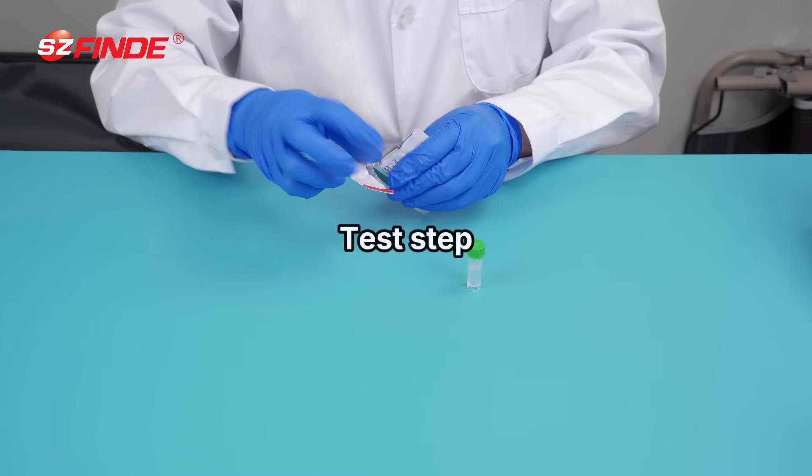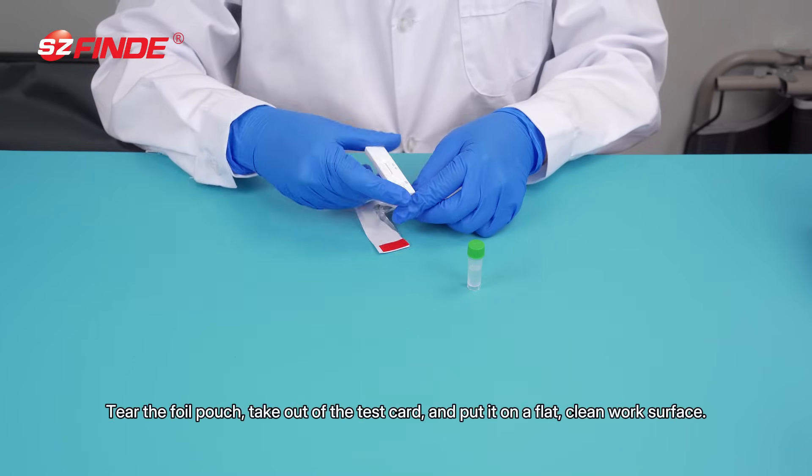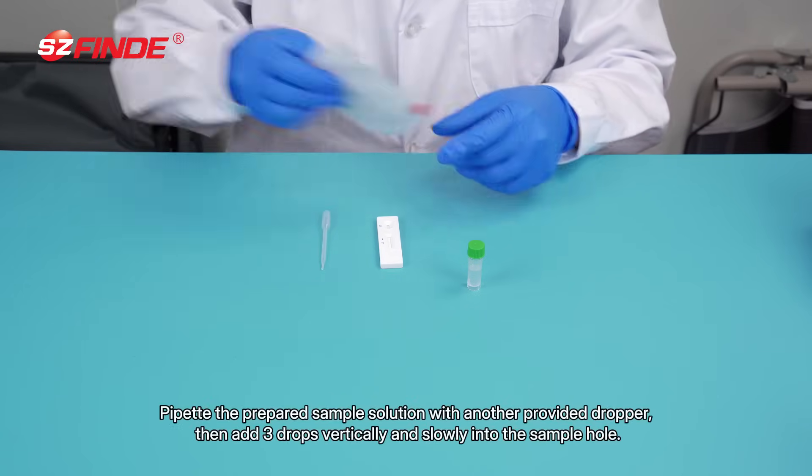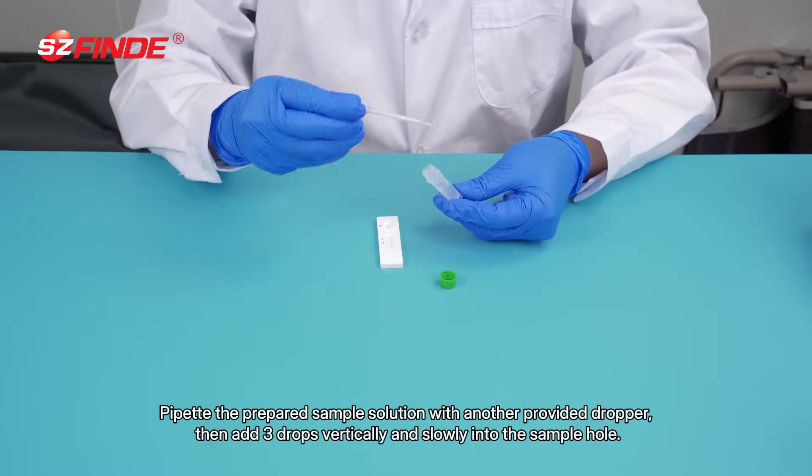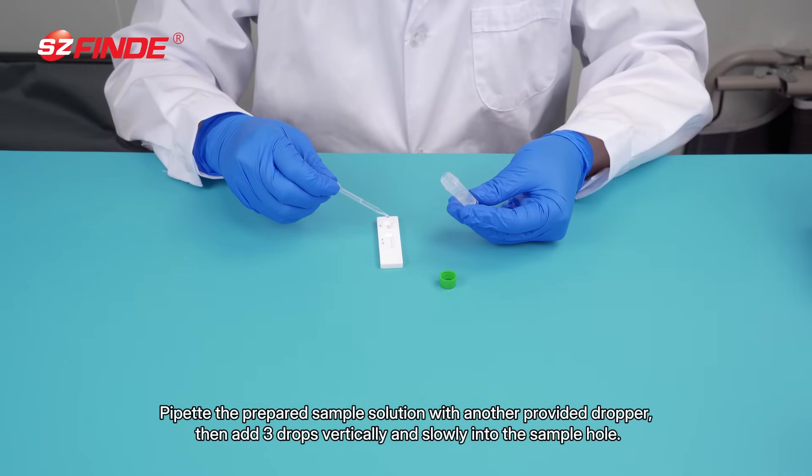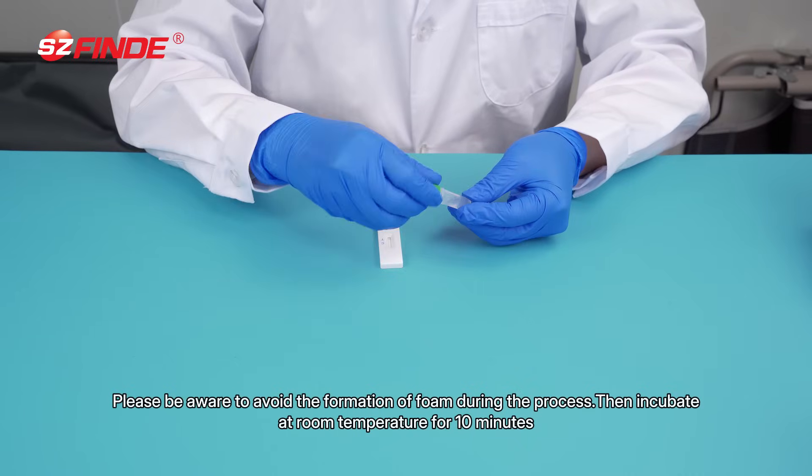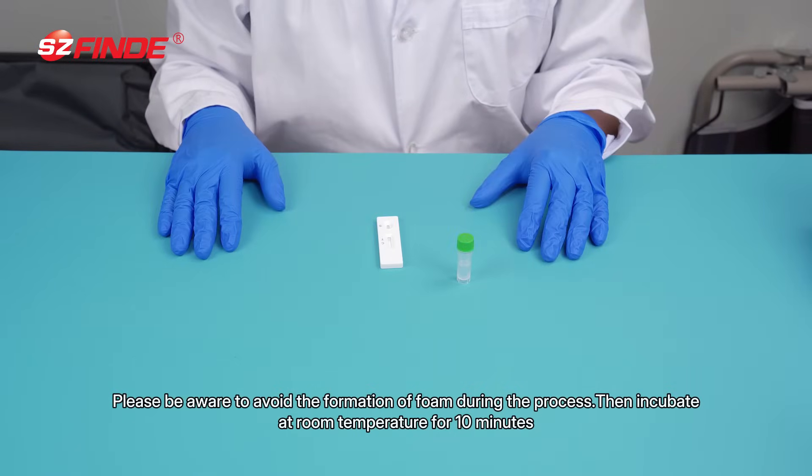Tear the foil pouch, take out the test card, and put it on a flat, clean work surface. Pipette the prepared sample solution with another provided dropper, then add three drops vertically and slowly into the sample hole. Avoid the formation of foam during the process, then incubate at room temperature for 10 minutes.